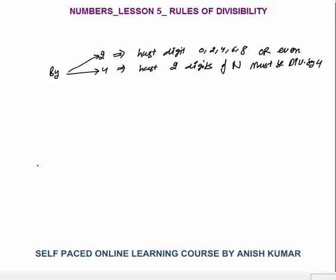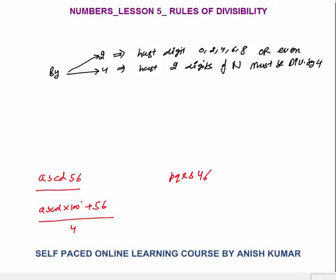What is the logic behind this? Take any number — say ABCD56. This number can be broken as ABCD × 100 + 56, divided by 4. Now ABCD × 100 is always divisible by 4, so the remainder here would be 0. Because 100 divided by 4 gives remainder 0, and 0 times something is 0.